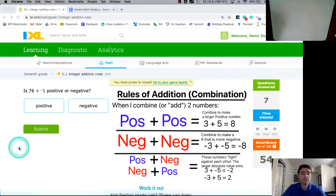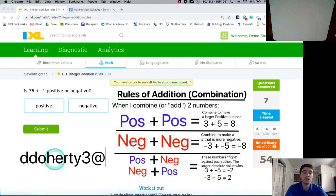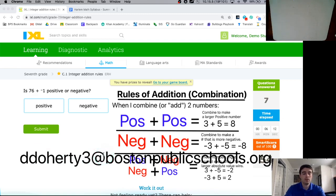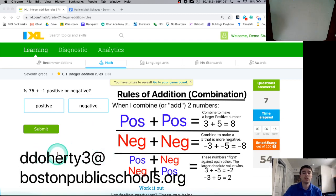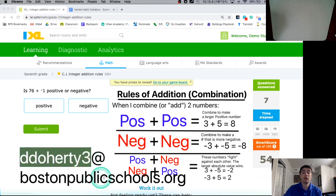My email address, which I'm putting on the screen, is ddoherty3 at bostonpublicschools.org. So again, if you need any help, please always feel free to email me at ddoherty3 at bostonpublicschools.org. Thanks for working and keeping on learning in the middle of the summer. I think it's great that some of you are signing on to IXL and learning with us.